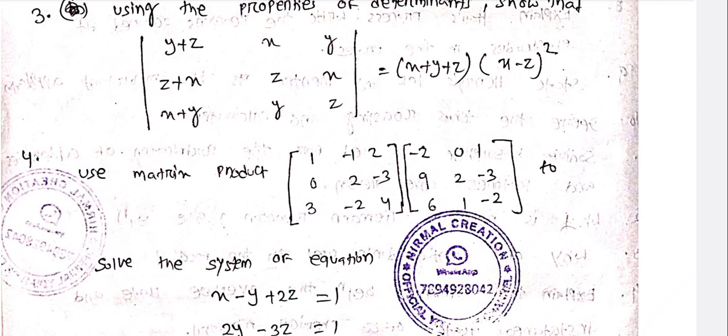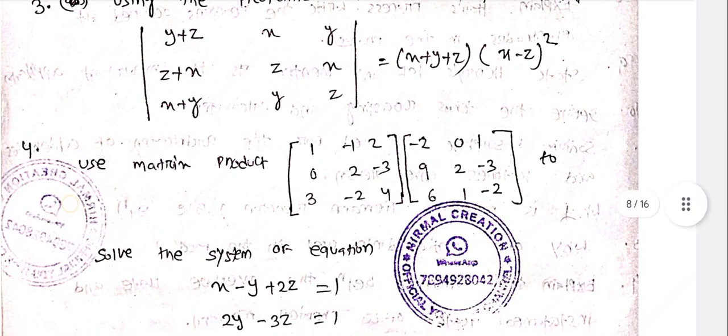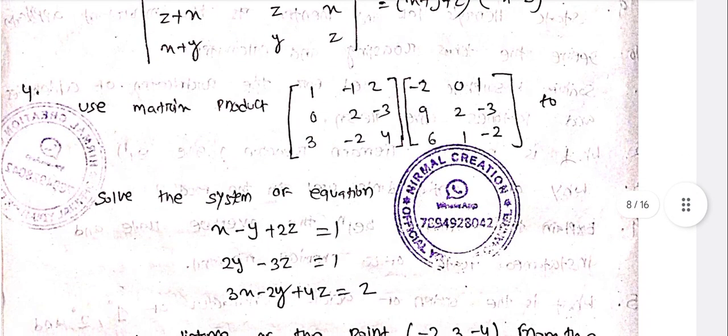Find the matrix product: [1, -1, 2; 0, 2, -3; 3, -2, 4] times [-2, 0, 1; 9, 2, -3; 6, 1, -2].